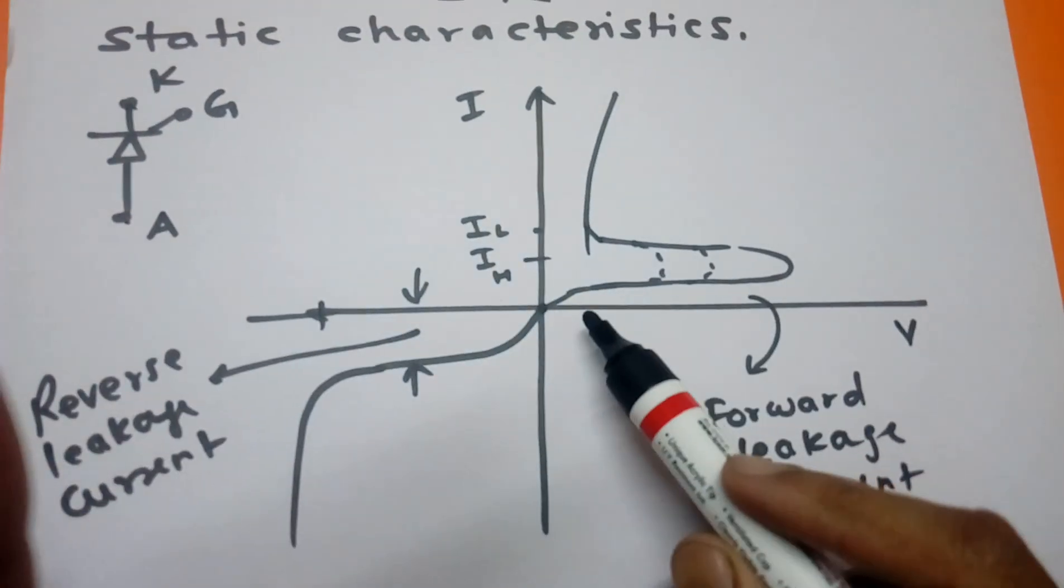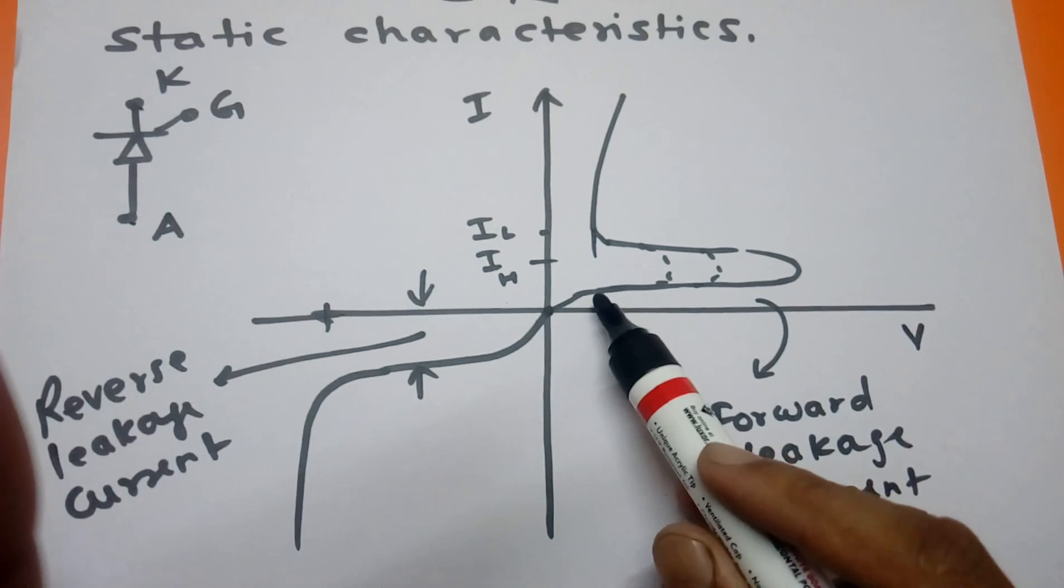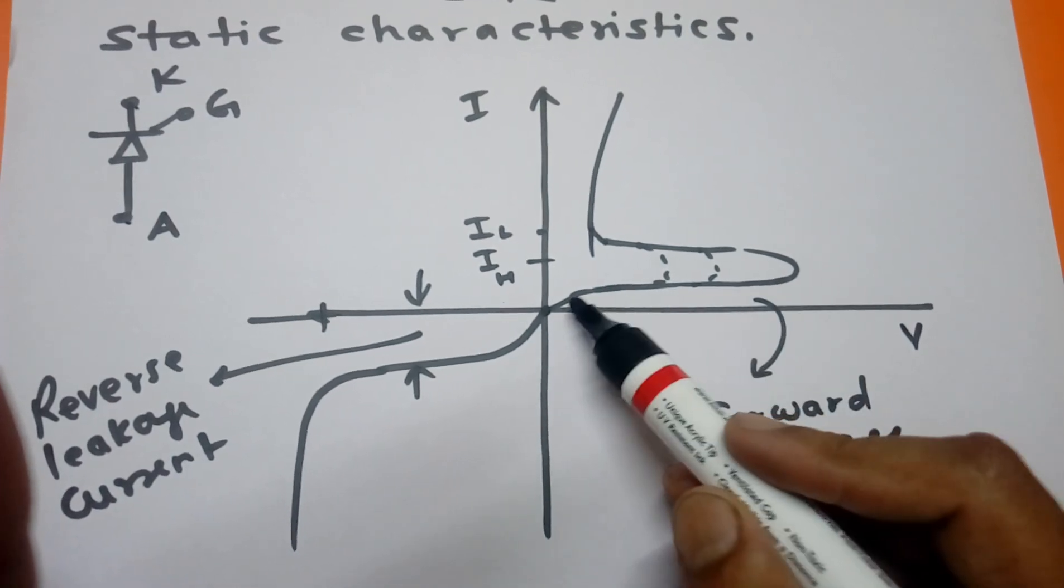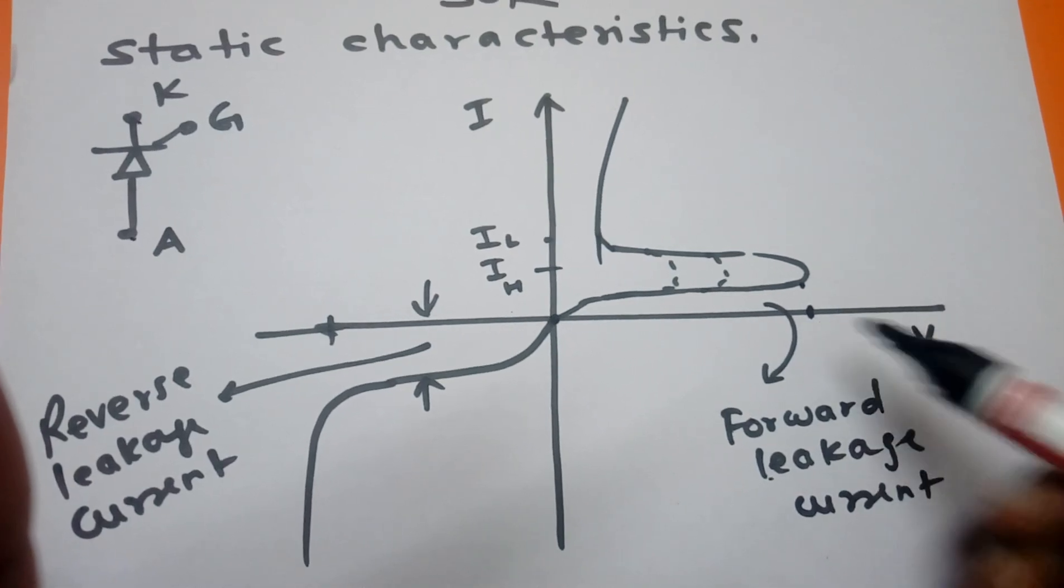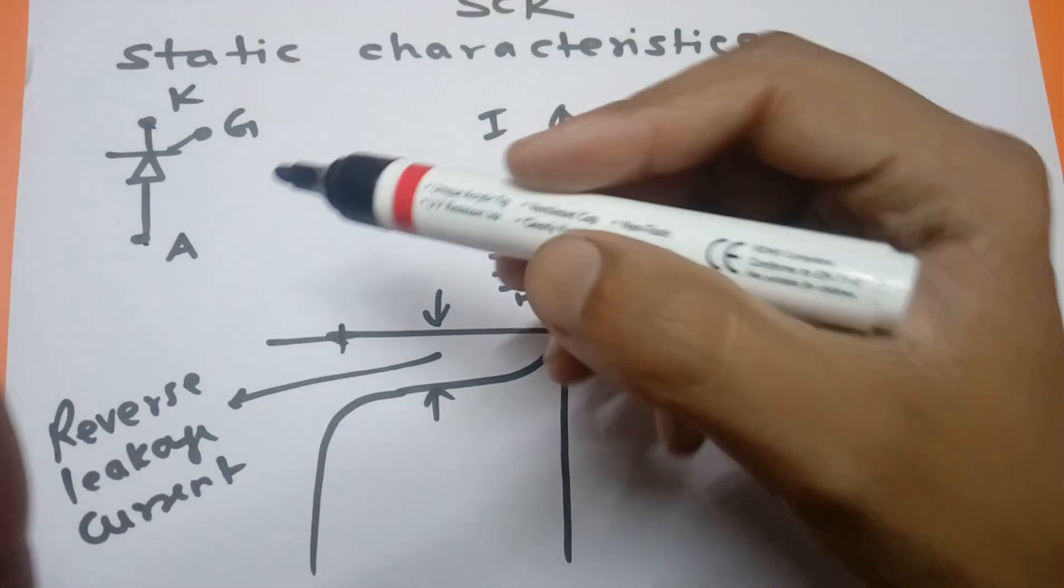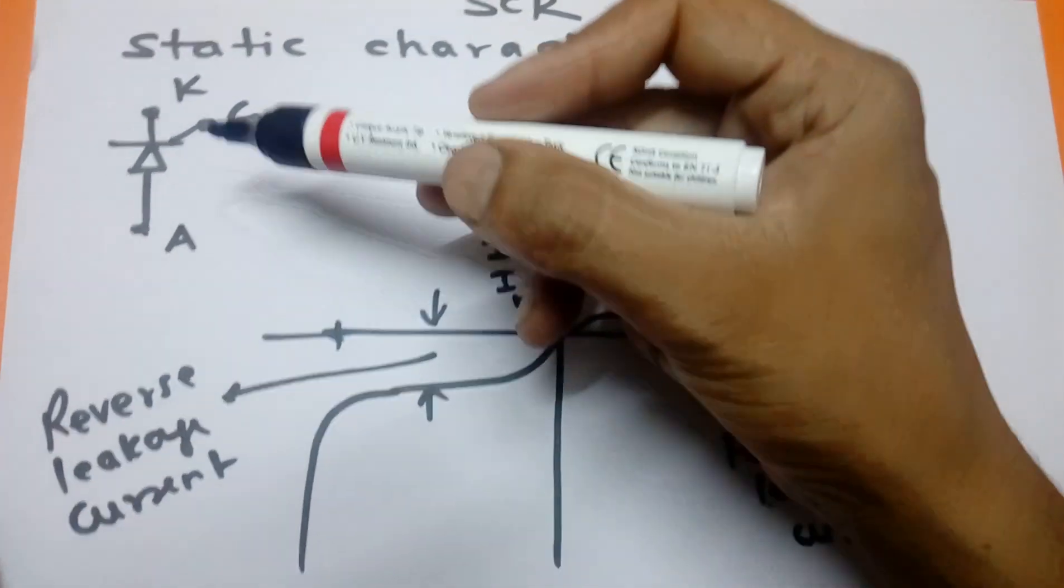In this mode, very little forward leakage current flows in the SCR. It will go up to here, and this is called the forward breaking over voltage mode.